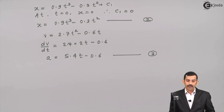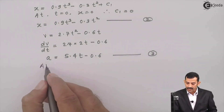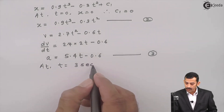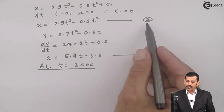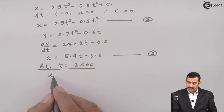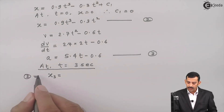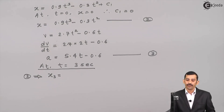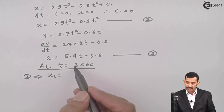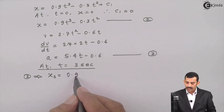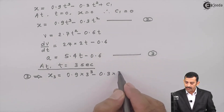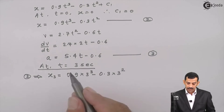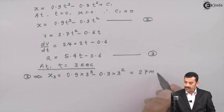We now know the equations for position, velocity, and acceleration. The problem asks for position and acceleration at t = 3 seconds. Using Equation 2 to find position: x₃ = 0.9 × (3)³ − 0.3 × (3)² = 0.9 × 27 − 0.3 × 9. Using a calculator, this comes out to be 27 meters. This is the first answer.